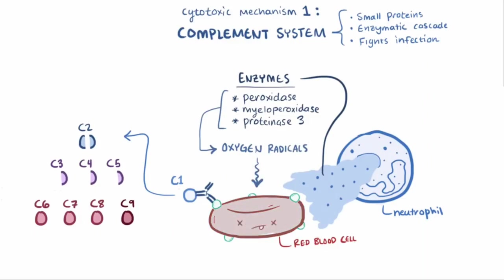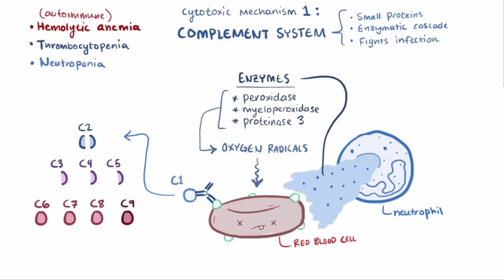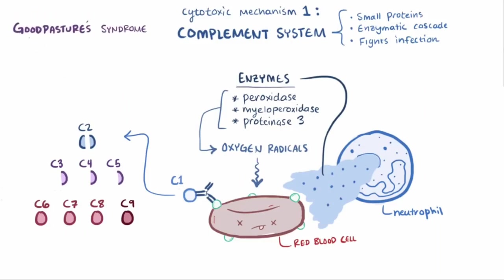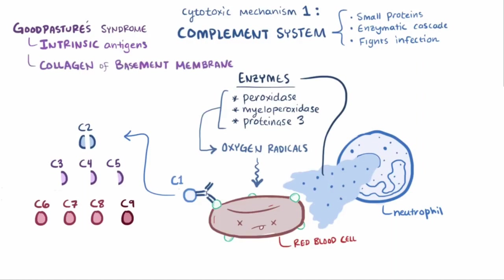When it comes to drug reactions like penicillin, type 2 hypersensitivity can result in hemolytic anemia, sometimes called autoimmune hemolytic anemia, as well as thrombocytopenia or neutropenia, since these are all blood cell types that are often affected. This mechanism is also involved in diseases like Goodpasture syndrome, where antibodies bind to intrinsic antigens on collagen of the basement membrane in the glomeruli in the kidney or the alveoli in the lungs, rather than extrinsic antigens as in the penicillin example.